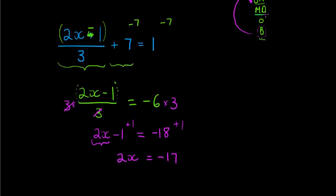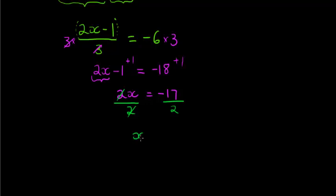Next, multiply and divide. I am multiplying. 2x equals negative 17. So if I divide with a 2, divide with a 2, this cancels and my final answer is x equals negative 8 and a half.